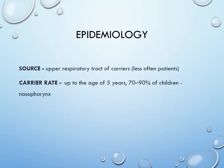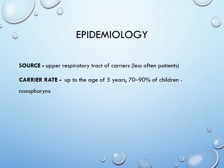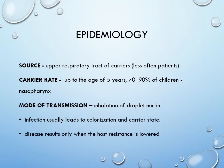Regarding epidemiology, the main source of infection is carriers — upper respiratory tract carriers who harbor this bacteria — rather than patients. Carrier rate up to age 5 years: 70 to 90 percent of children carry this bacteria in the nasopharynx. From carriers it is transmitted to others by inhalation of droplet nuclei, leading to colonization and carrier state, and as immunity drops, it results in disease.